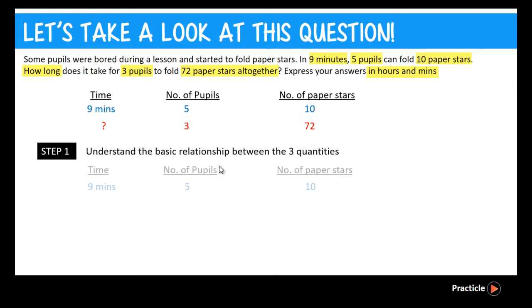So since we know that 5 pupils can make 10 paper stars in 9 minutes, let's ask ourselves this. For the same amount of time, how many paper stars can 1 pupil fold? If the number of pupils decrease, will the number of paper stars that are being folded go up or down? It will go down, right?